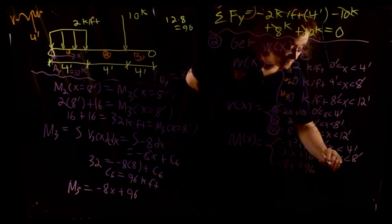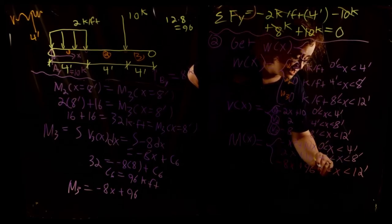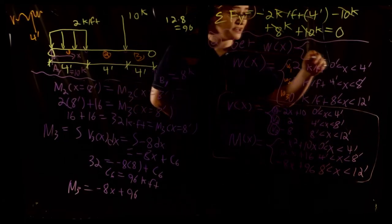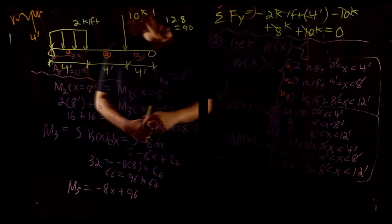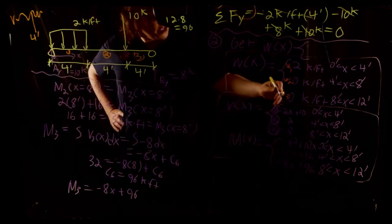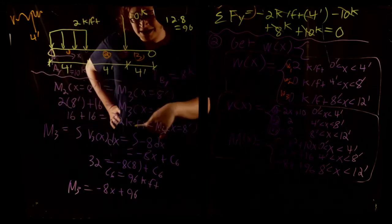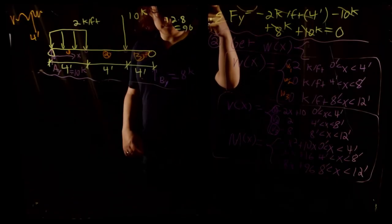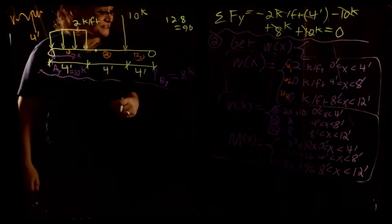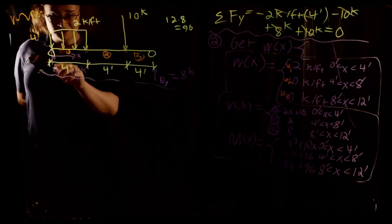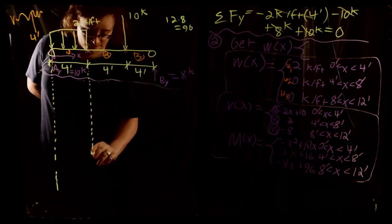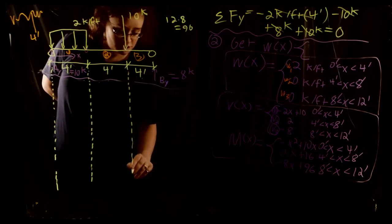Now let's plot the shear and moment diagrams directly below the free body diagram with projection lines at the discontinuity locations. The shear diagram starts at 10 kips, decreases linearly to 2 kips at x=4 ft (V1 = -2x+10), stays constant at 2 kips across 4–8 ft, drops to -8 kips at x=8 ft due to the point load, remains constant at -8 kips to x=12 ft, then jumps back to zero at the right support.